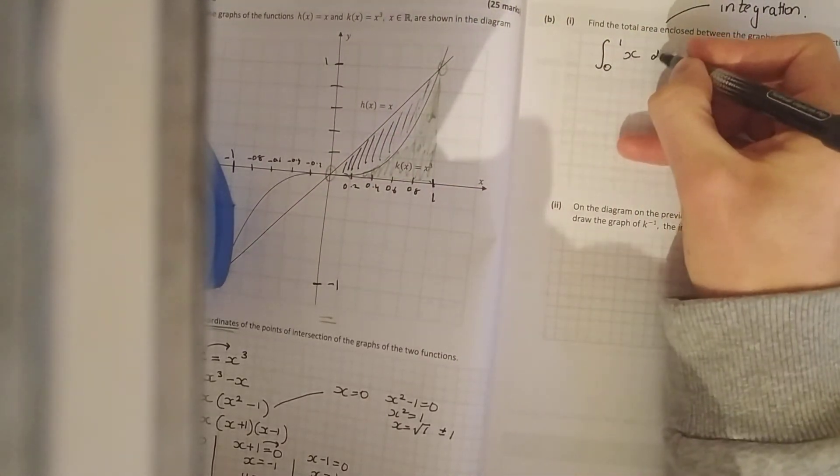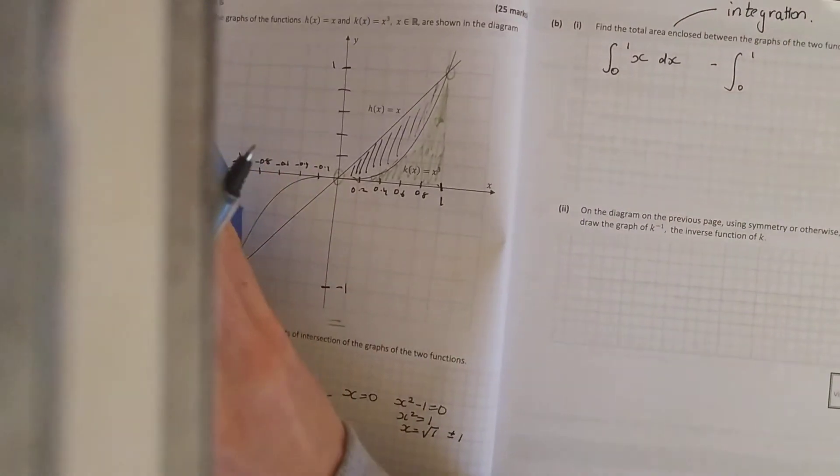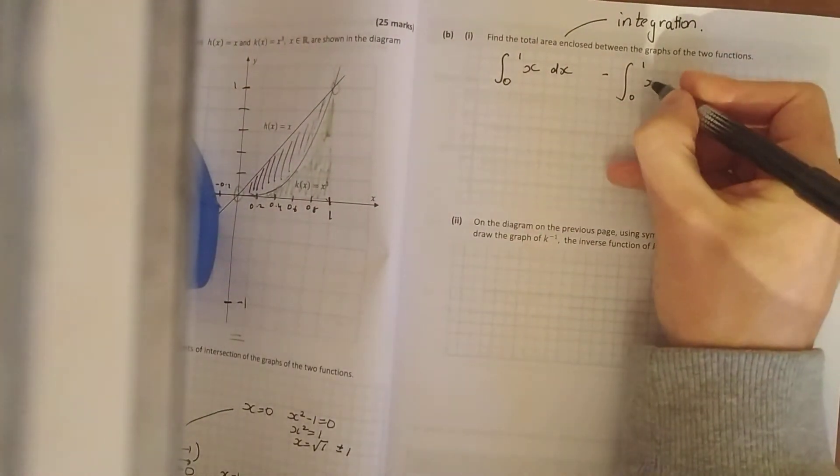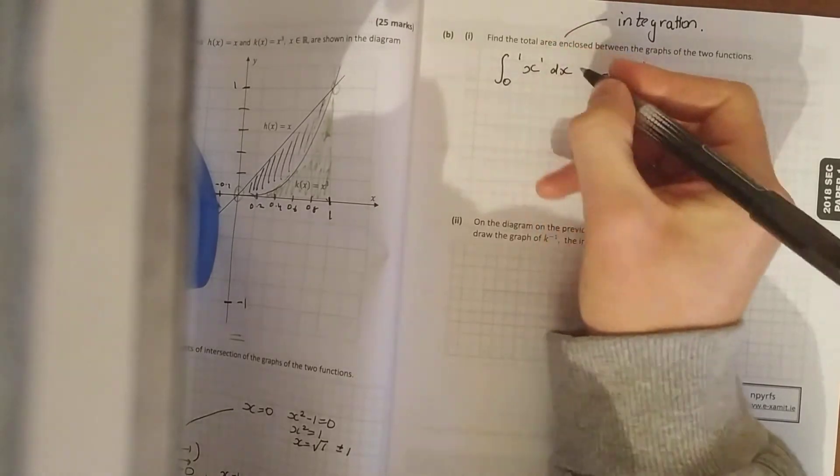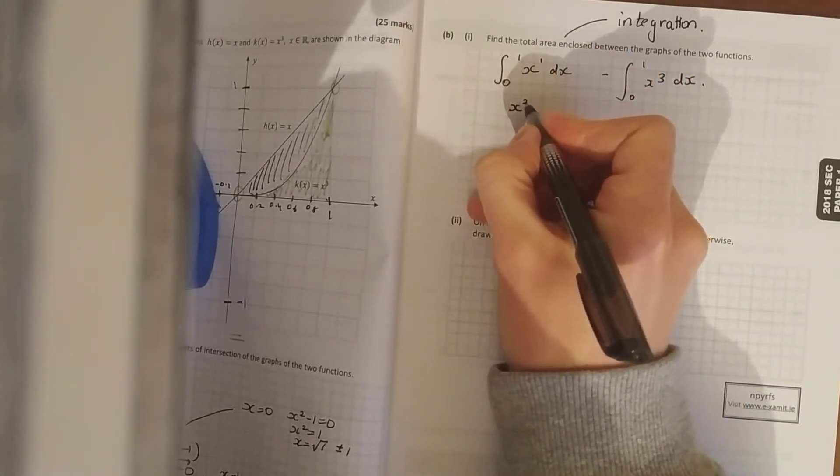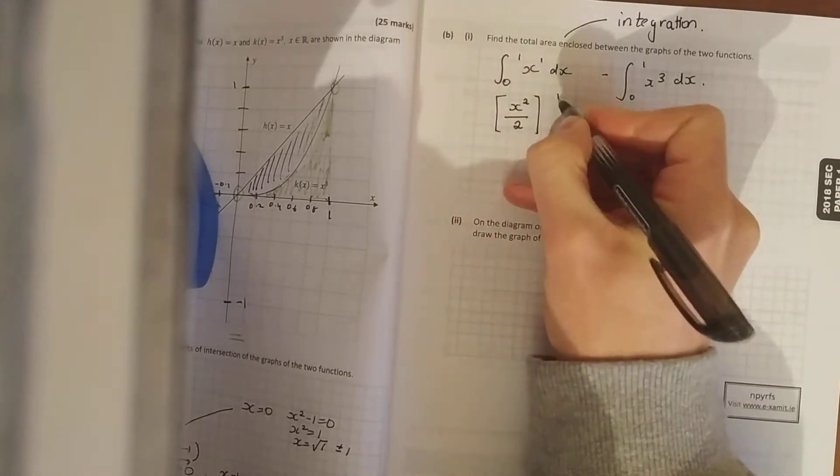So you're going between 0 and 1 of your x function, and you're going to take away area under the curve of your cubic. Now to integrate, what you do is that's the power of 1, you increase the power by 1.